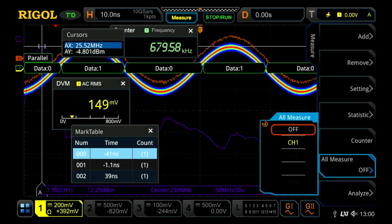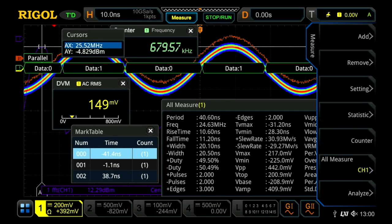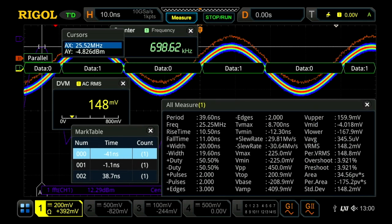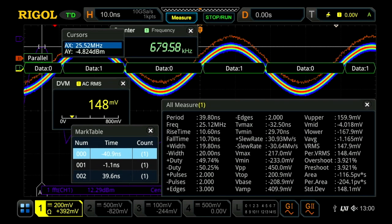Now we can see really a whole set of measurements being done and still maintaining that 680,000 waveforms per second area.